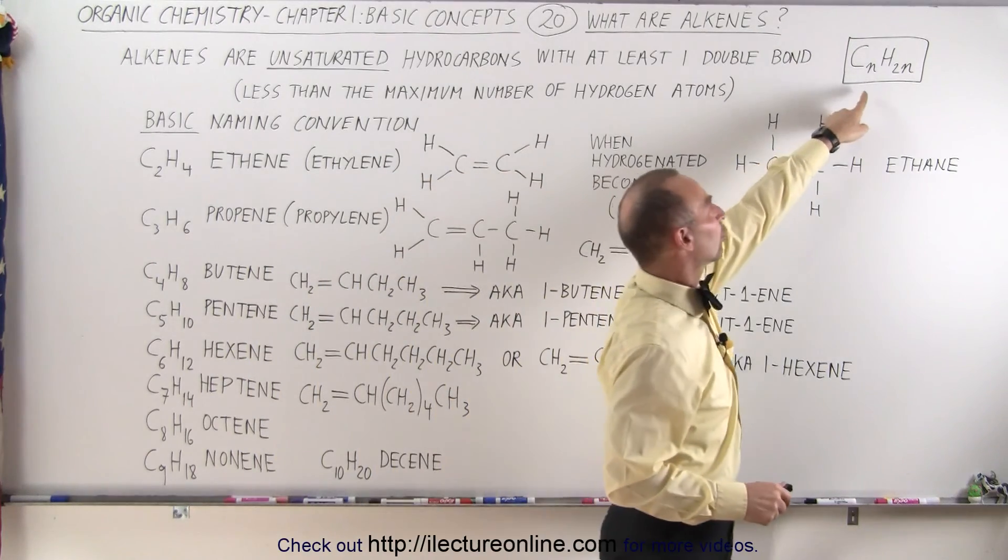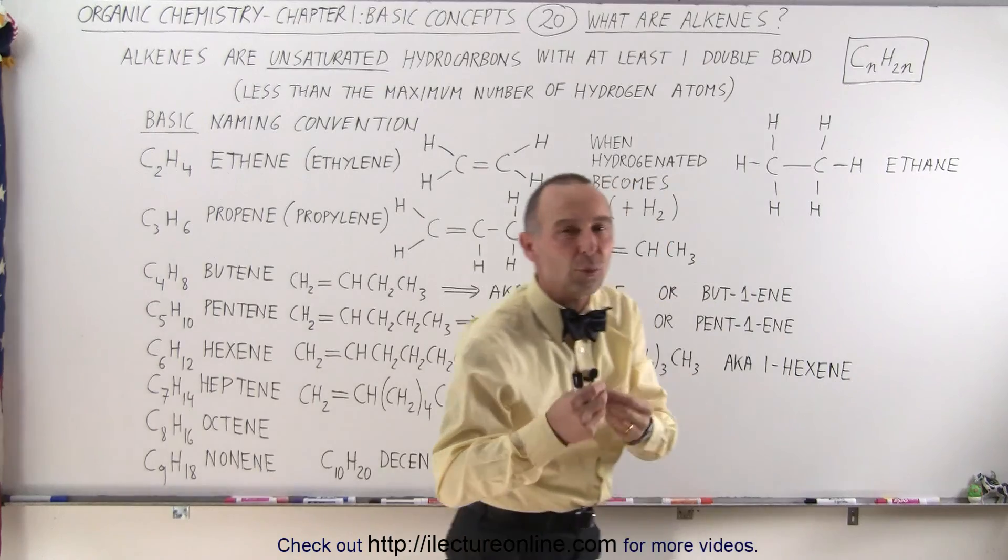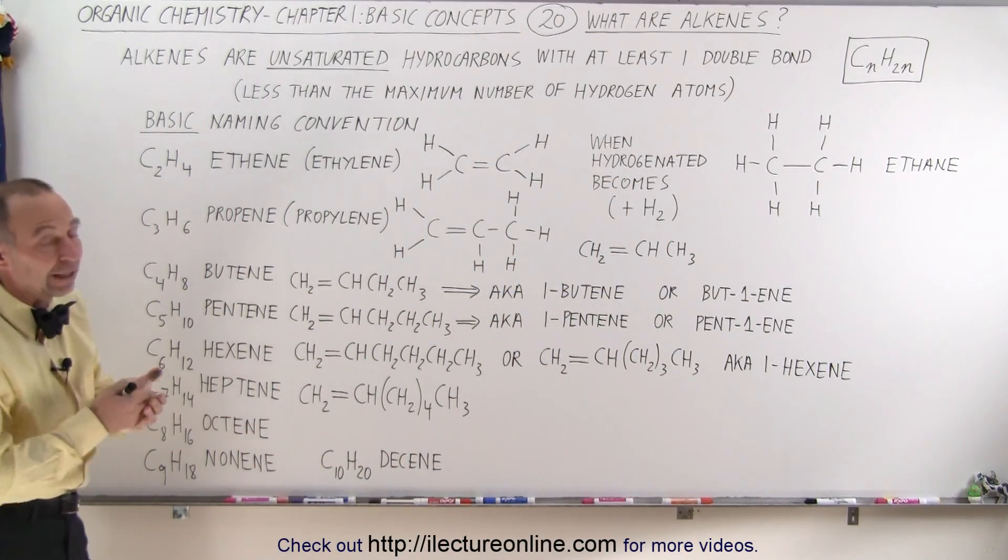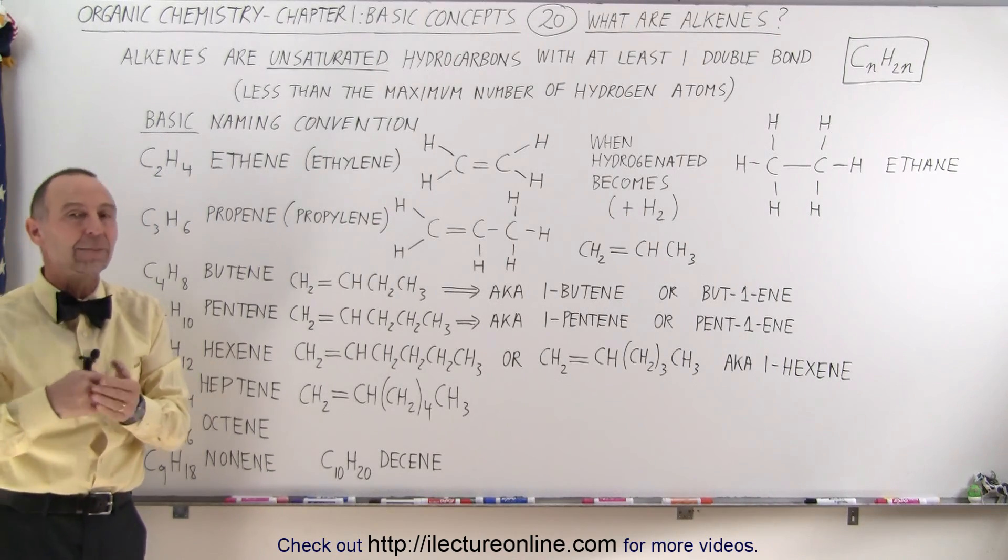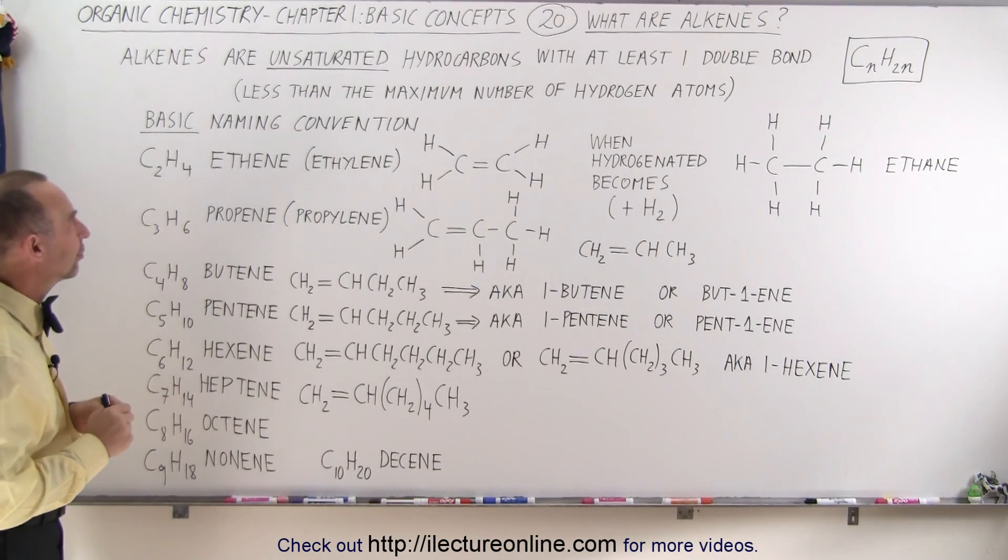What that means is that the general equation of an alkene is CnH2n, which means there's twice as many hydrogens as there are carbons in the hydrocarbon chain. Now that's different from an alkane because that one has two more hydrogens than twice as many hydrogens than carbons.